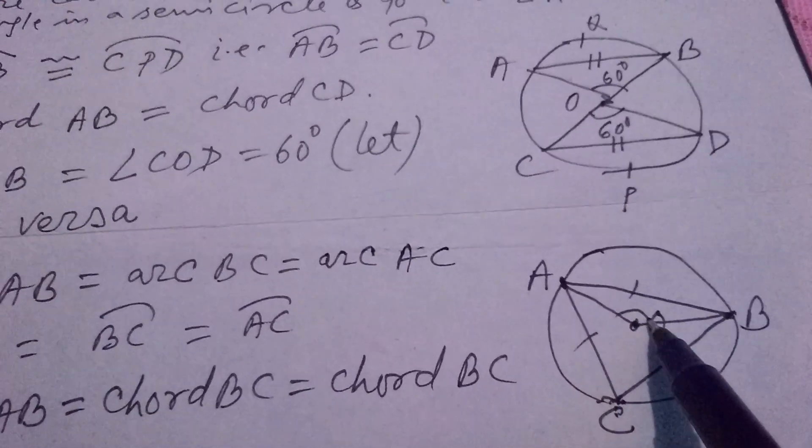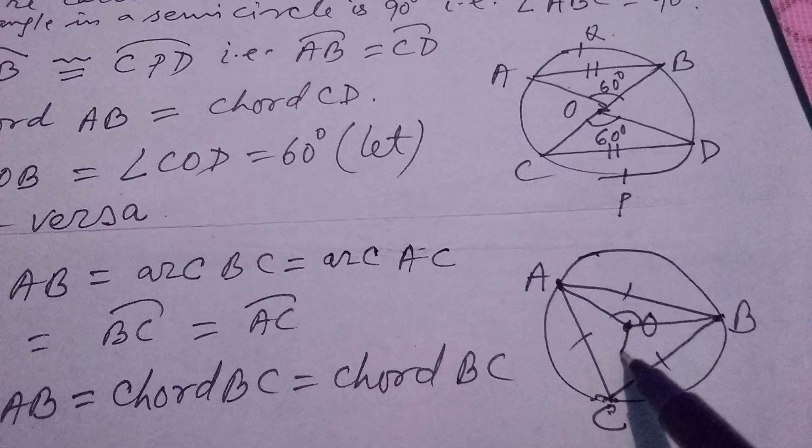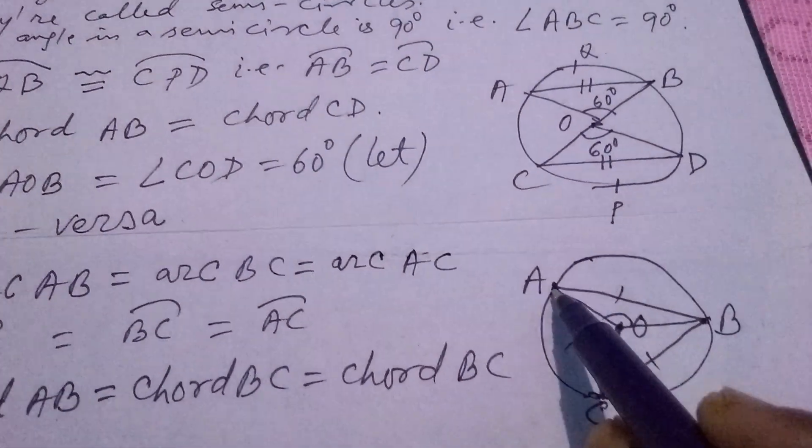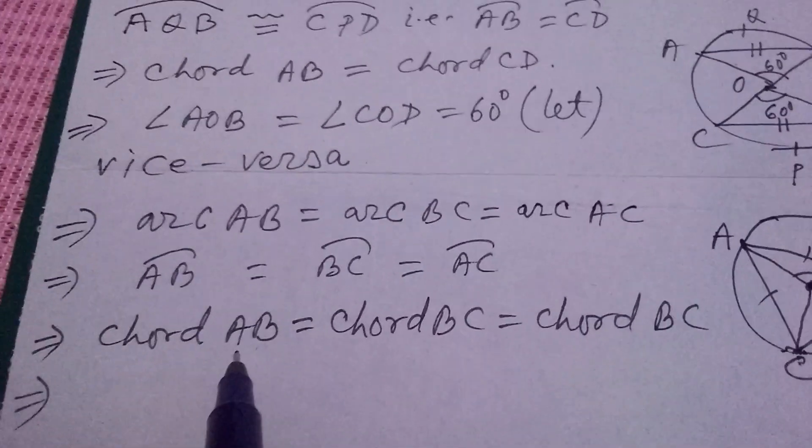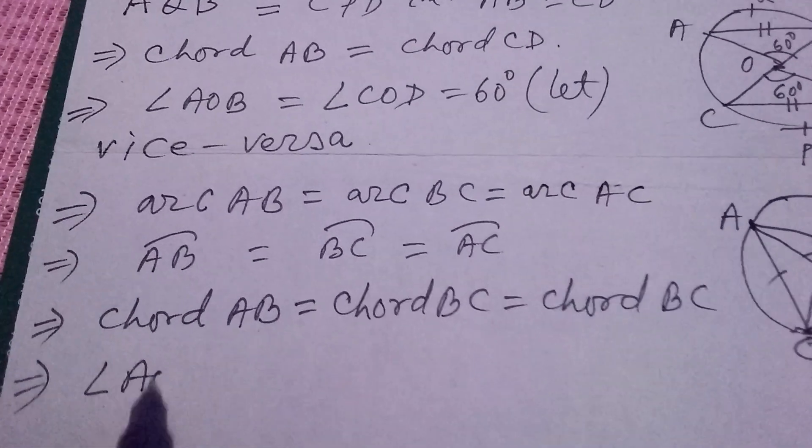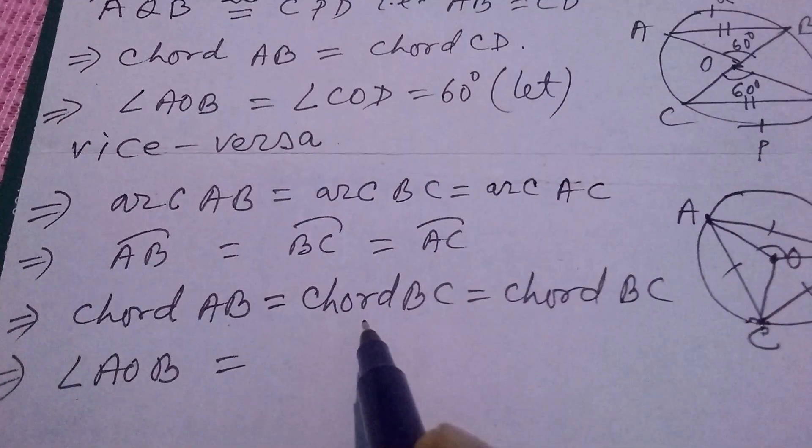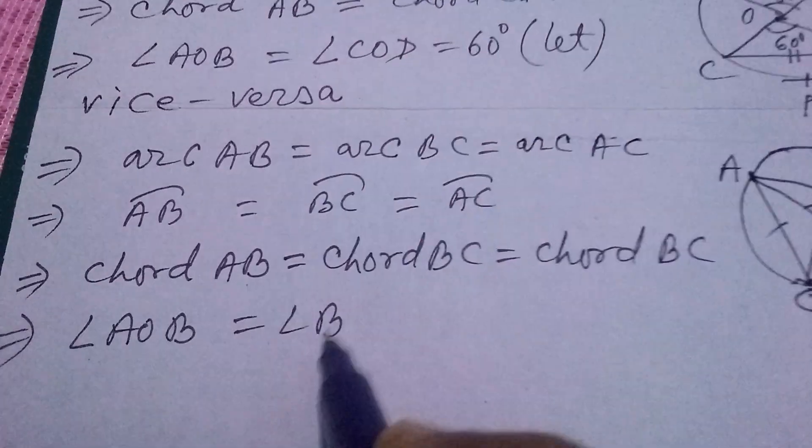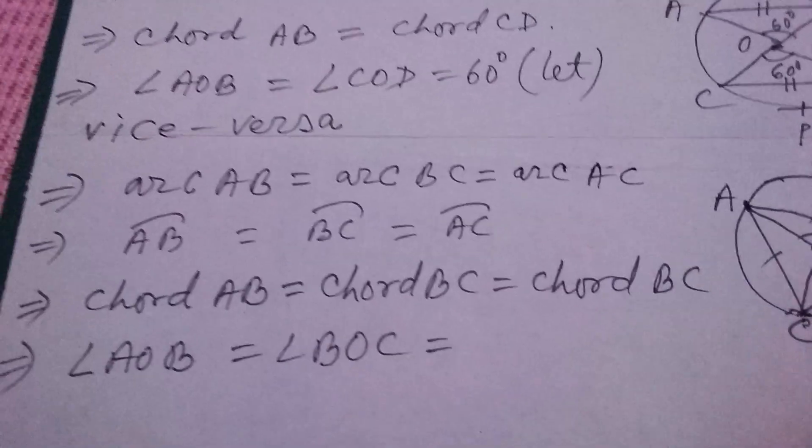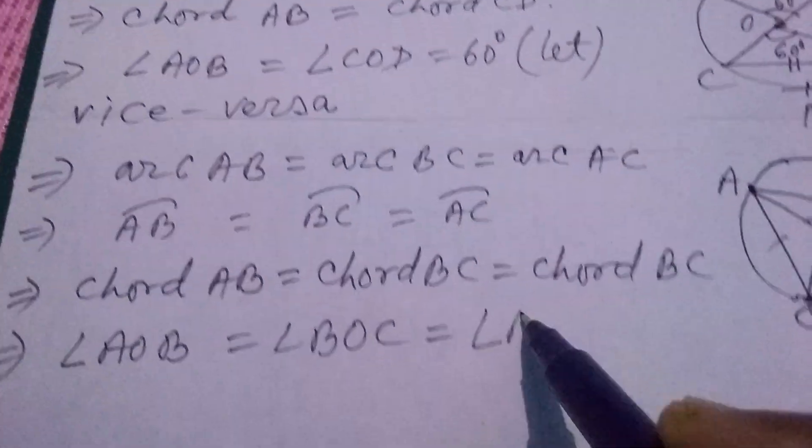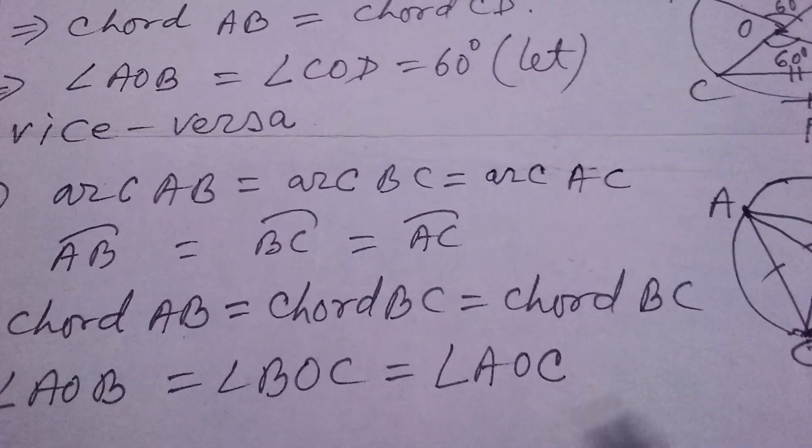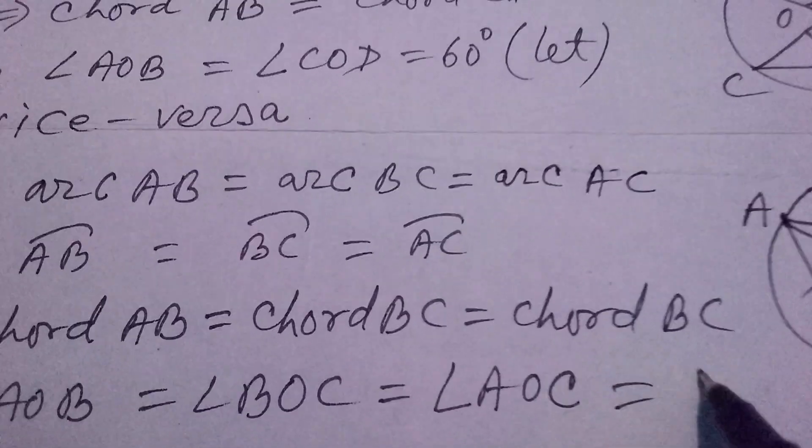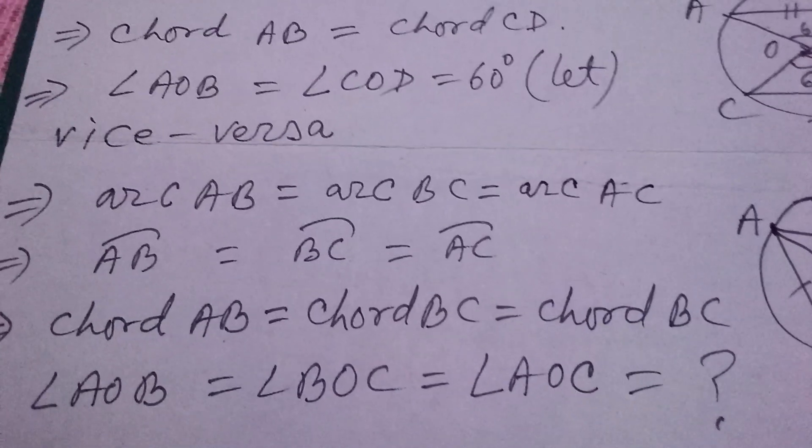Now, AB is making this angle. BC is making BOC, and AC is making AOC. That means, chord AB is making angle AOB, chord BC is making angle BOC, chord AC is making angle AOC. All these three angles are equal. And then, how to find how much it will be?